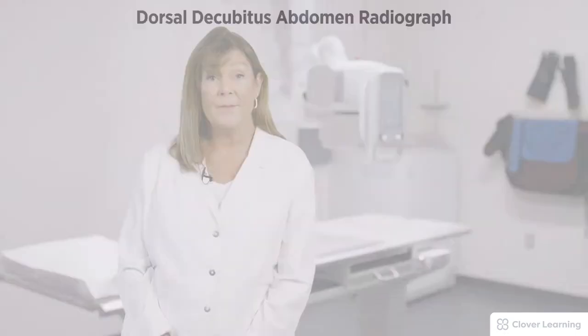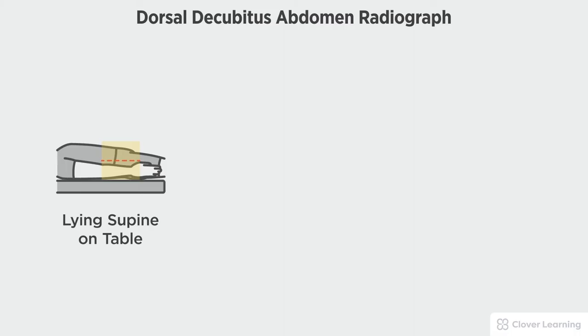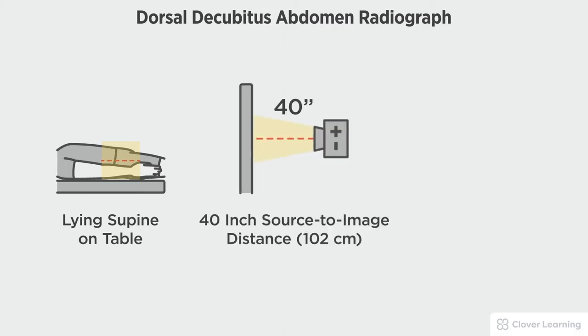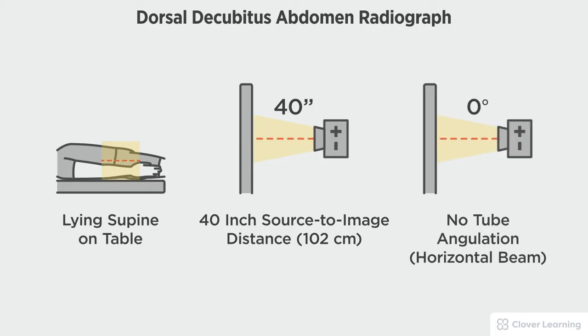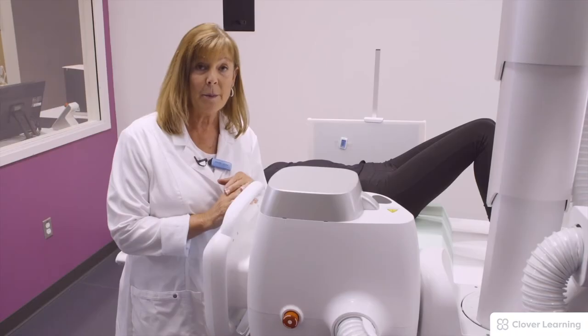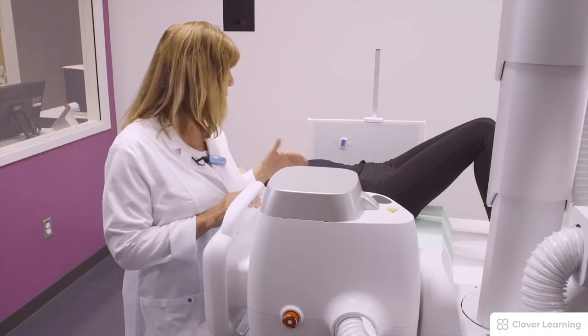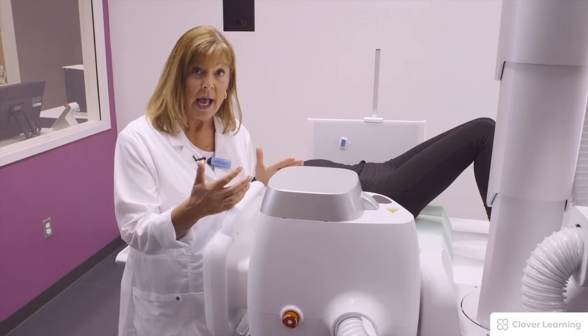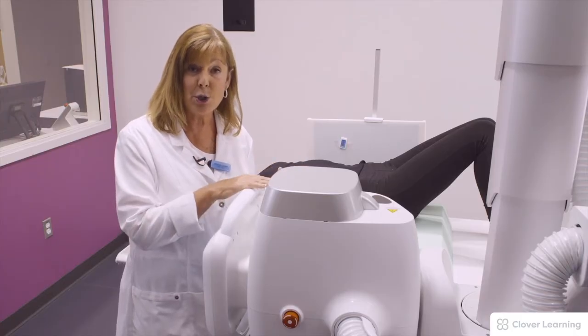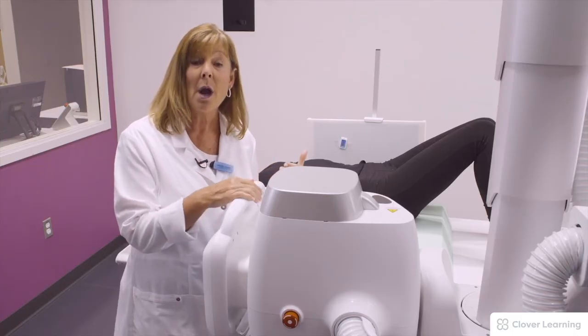In this view we will be demonstrating the dorsal decubitus abdomen. The dorsal decubitus abdomen should be performed with the patient lying supine, a 40-inch source to image distance, and a horizontal beam with no tube angulation. Our patient is on her back, which is supine. We are going to call this dorsal because the x-ray tube is now decubitus, or horizontal.